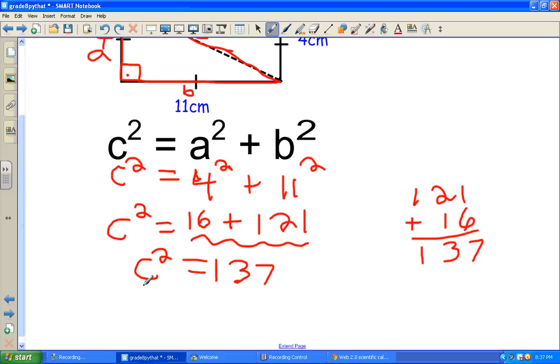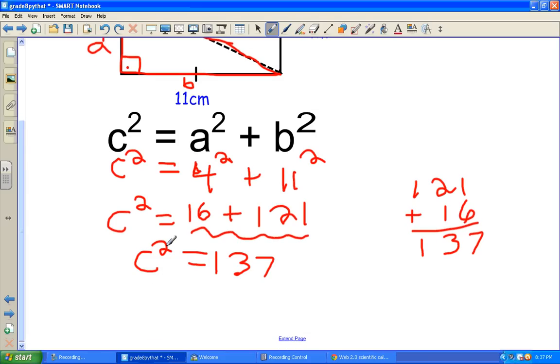The only thing we have left is we just want C by itself. So how do we get rid of a squared on this side? We simply do the opposite.